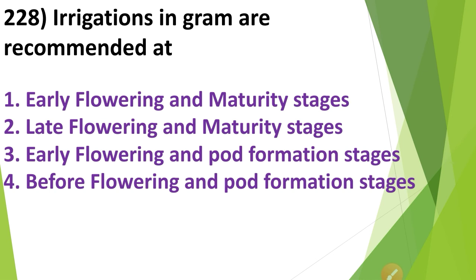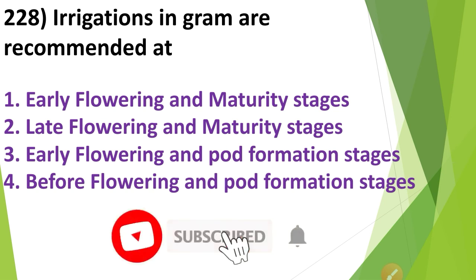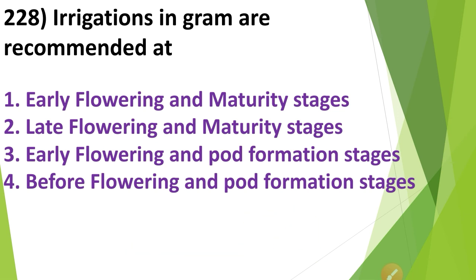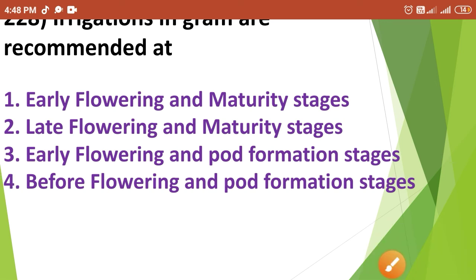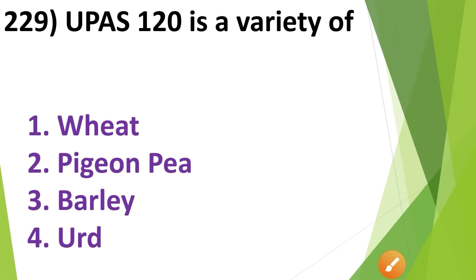Irrigations in gram are recommended at: 1. Early flowering and maturity stage, 2. Late flowering and maturity stages, 3. Early flowering and pod formation stages, 4. Before flowering and pod formation stages. The irrigations in gram are recommended at Option No. 4 — before flowering and pod formation stages.